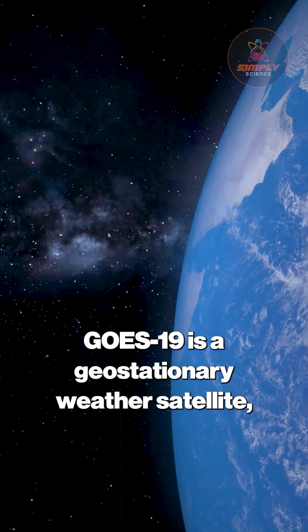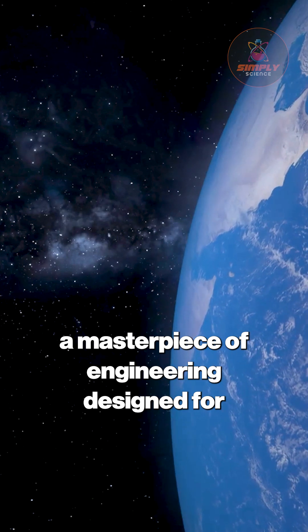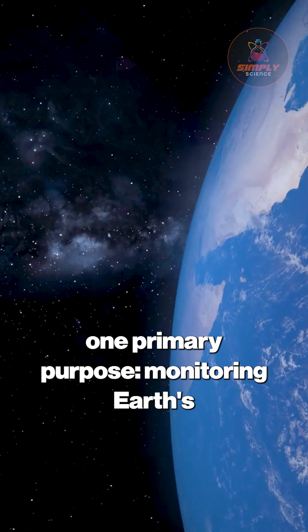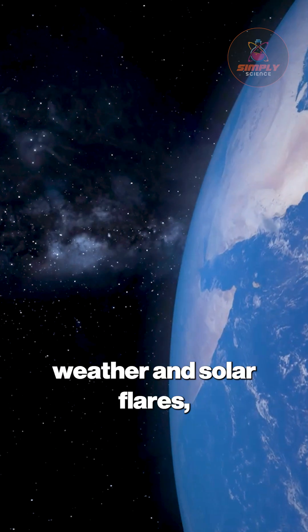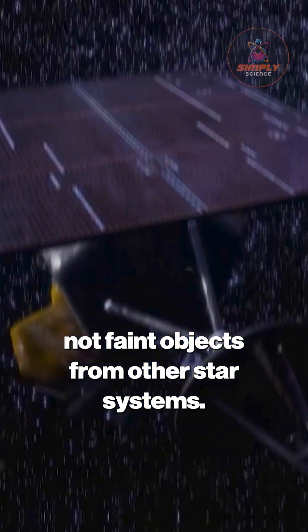GOES-19 is a geostationary weather satellite, a masterpiece of engineering designed for one primary purpose: monitoring Earth's weather and solar flares, not faint objects from other star systems.